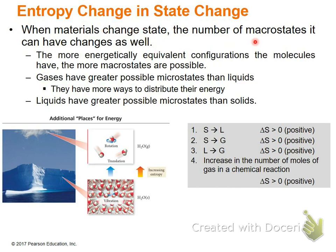When materials change state, the number of macrostates can change as well. From solid to liquid gives a positive change in entropy. Solid to gas is also positive. Liquid to gas is positive. And an increase in the number of moles of gas in a chemical reaction also gives a positive change in entropy. The reason is that liquids have higher entropy than solids — solids have crystal structure and are more ordered, so switching from solid to liquid gives a positive delta S.